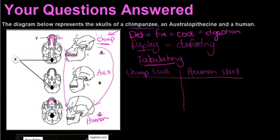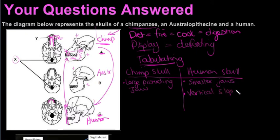Tabulate the differences visible from the diagram. Chimps have a large protruding jaw, and humans have smaller jaws that are not protruding. Because of these smaller jaws, humans have a vertical slope to the face, whereas chimps have a sloping face.